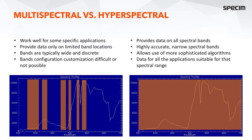When you have a hyperspectral dataset it provides you data on all the spectral bands within the range. You get highly accurate narrow spectral bands. You can use more sophisticated hyperspectral algorithms for processing and finding the most interesting locations for the spectral information. So the data for all applications can be found on the spectral range.